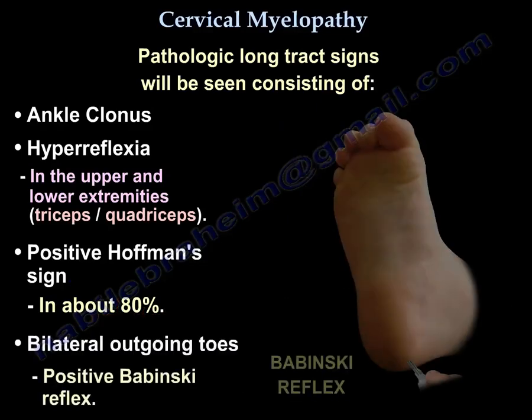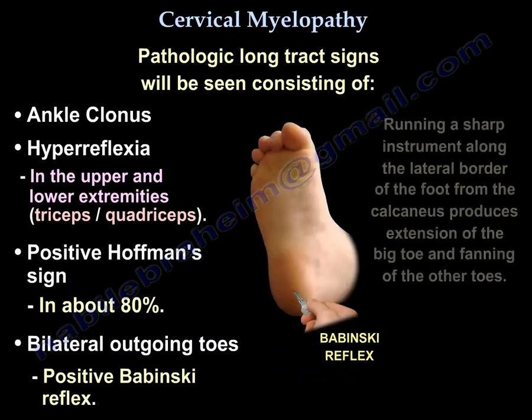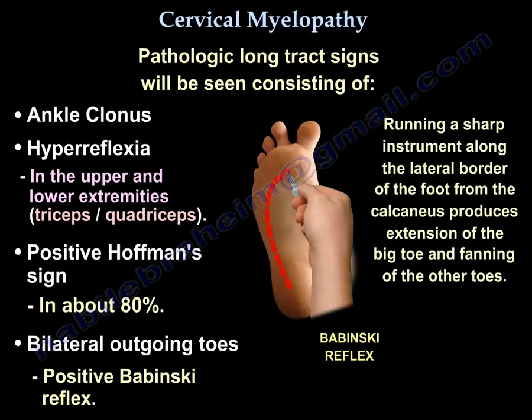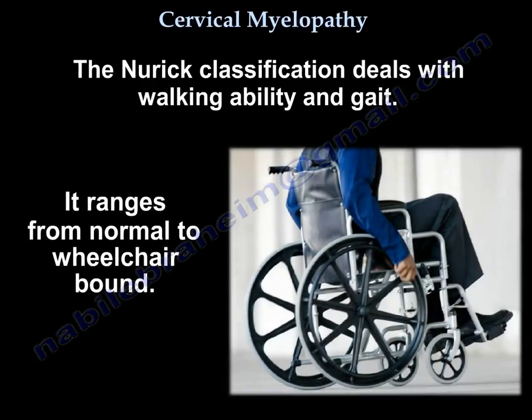Bilateral upgoing toes — Babinski is positive, performed by running a sharp instrument along the lateral border of the foot from the calcaneus, producing extension of the big toe and fanning of the other toes. The Nurick classification deals with walking ability and gait, ranging from normal to wheelchair bound.